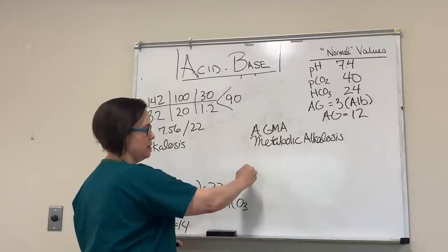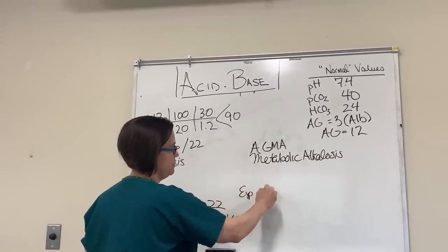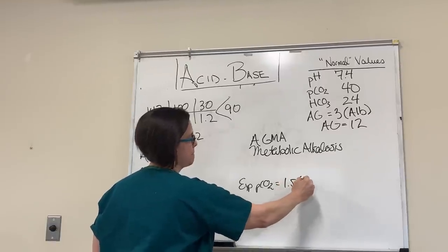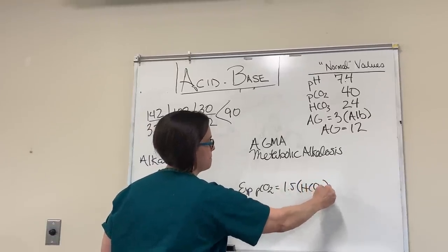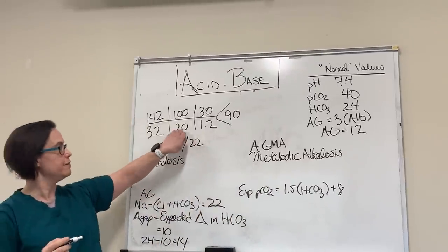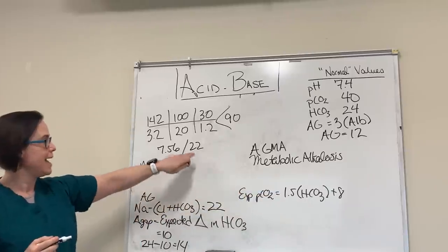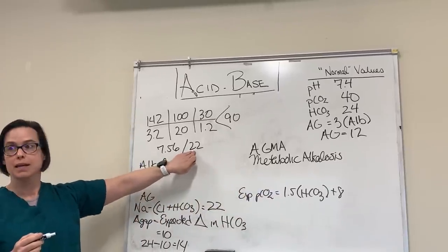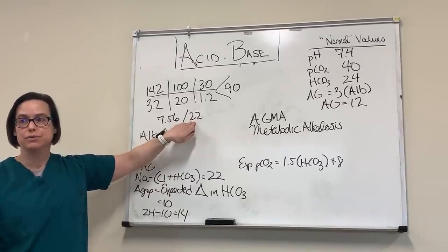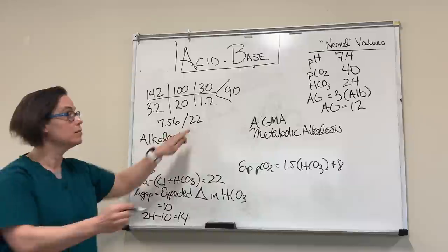One more step — Winters' formula. Expected PCO2 equals 1.5 times bicarb plus 8. So 1.5 times 20 equals 30, plus 8 equals 38. But our actual PCO2 is 22 — we're blowing off extra CO2. That's a respiratory alkalosis.